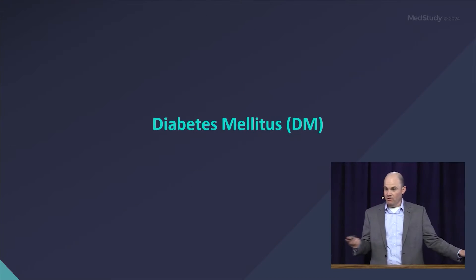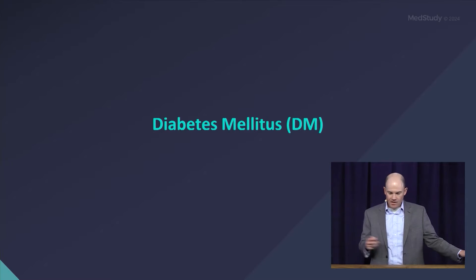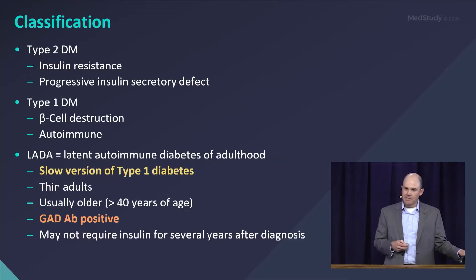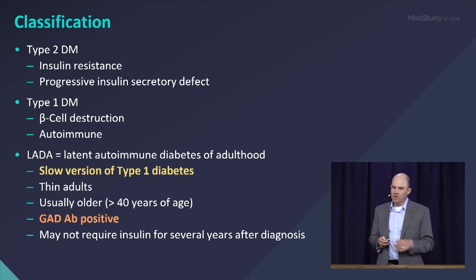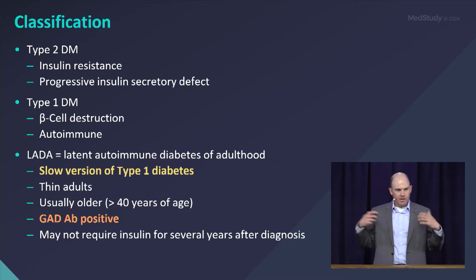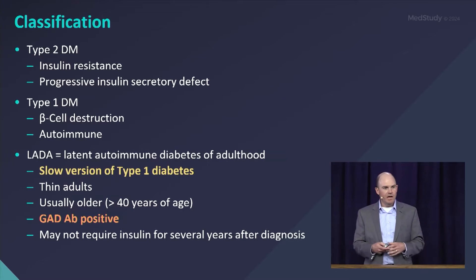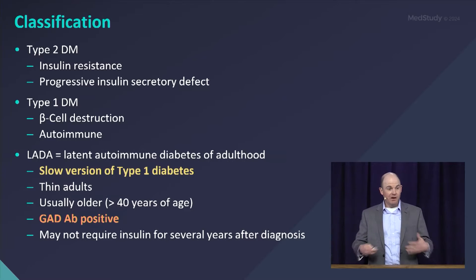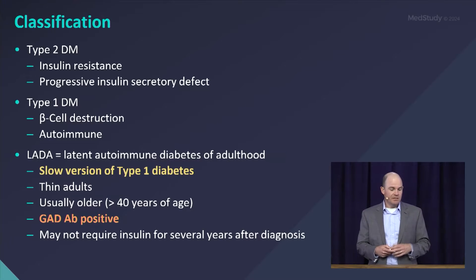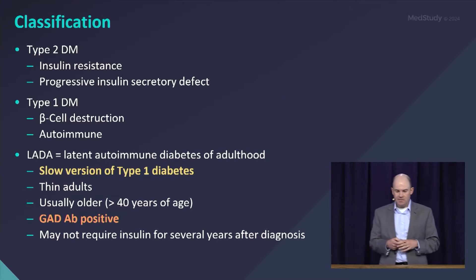We have about one hour left in the endocrine section, so we're going to spend most of that time talking about diabetes. The classification of diabetes: type 2 diabetes is driven primarily by obesity, which leads to insulin resistance and progressive beta cell deficits.